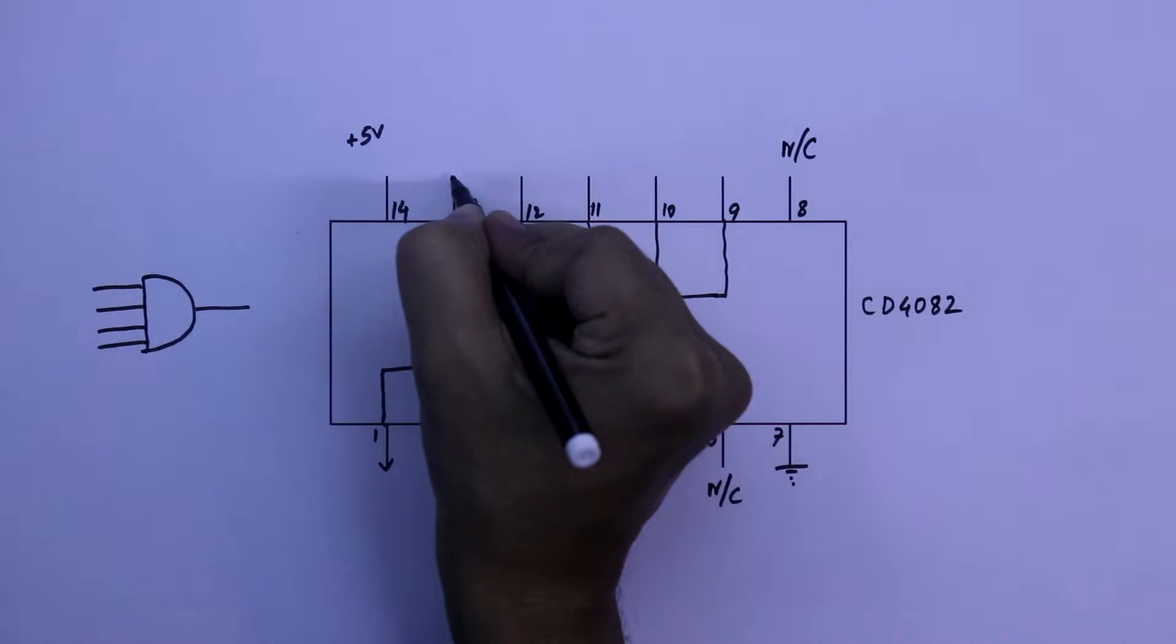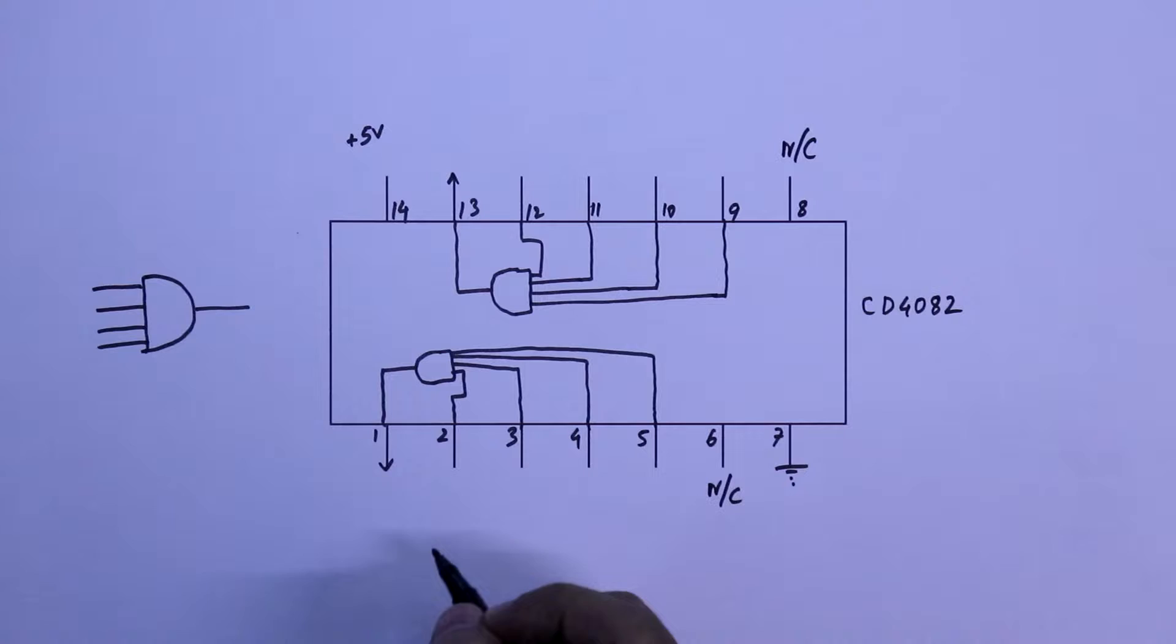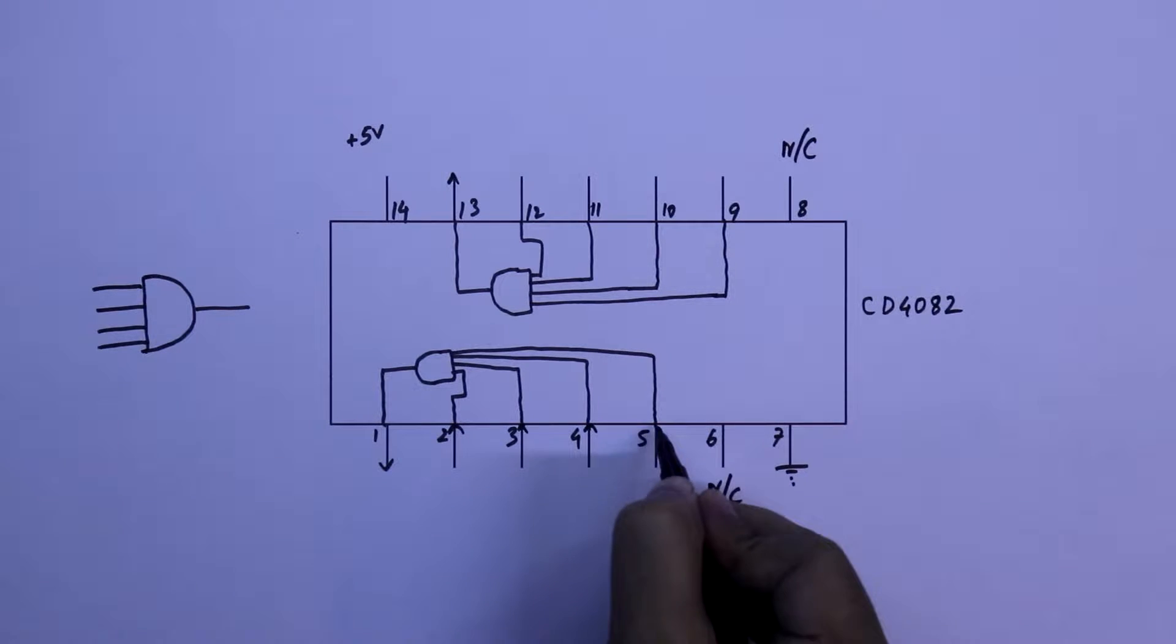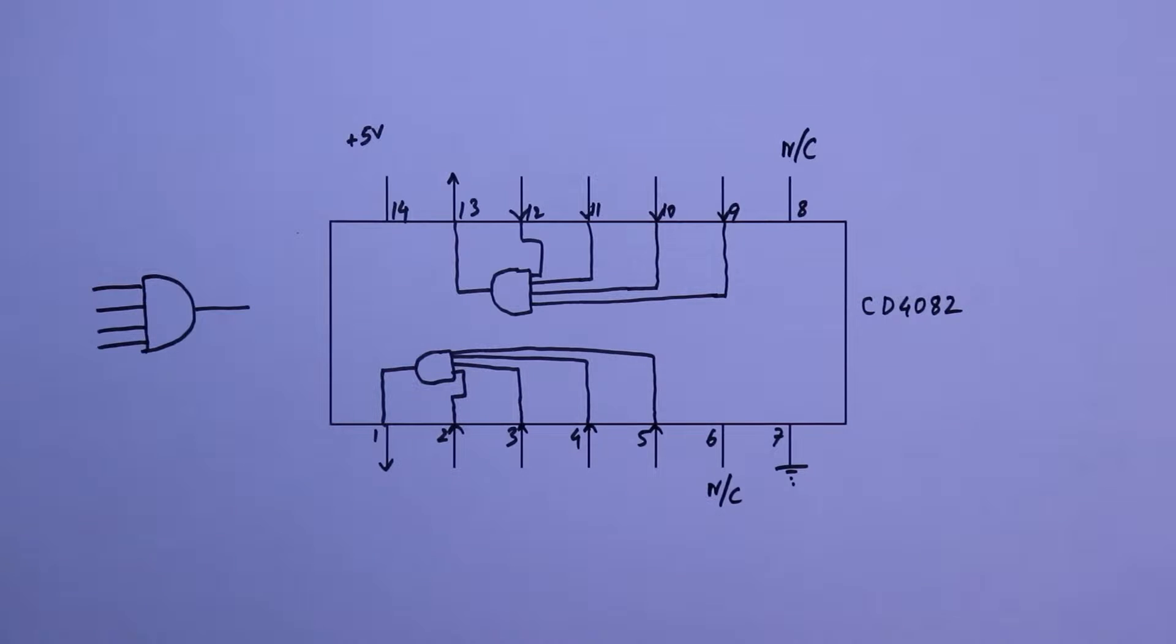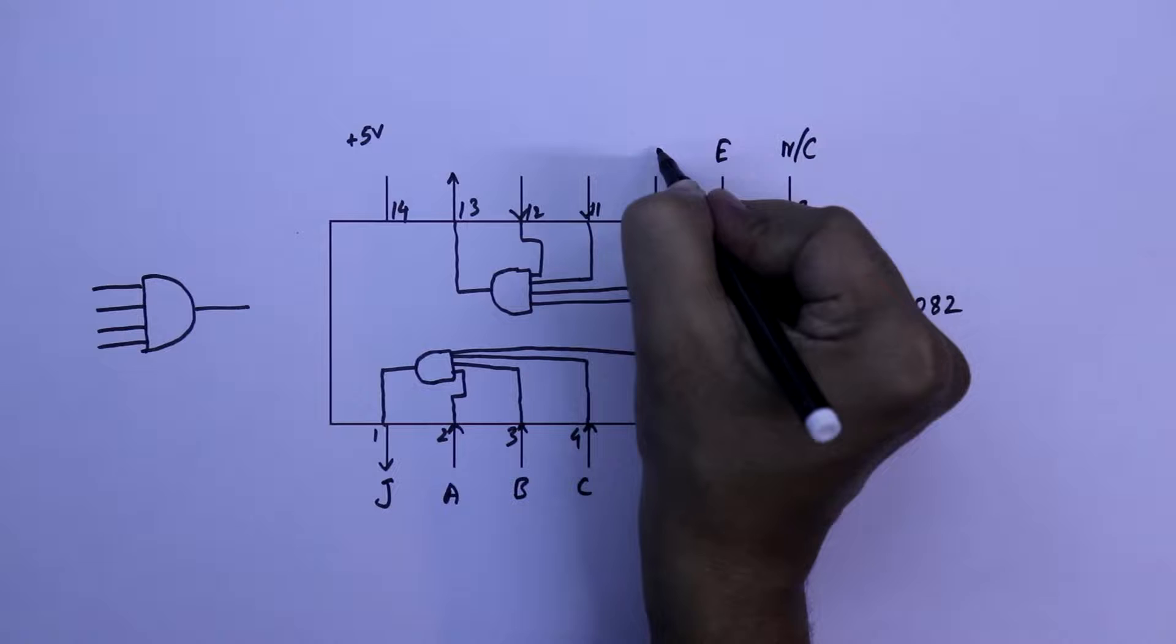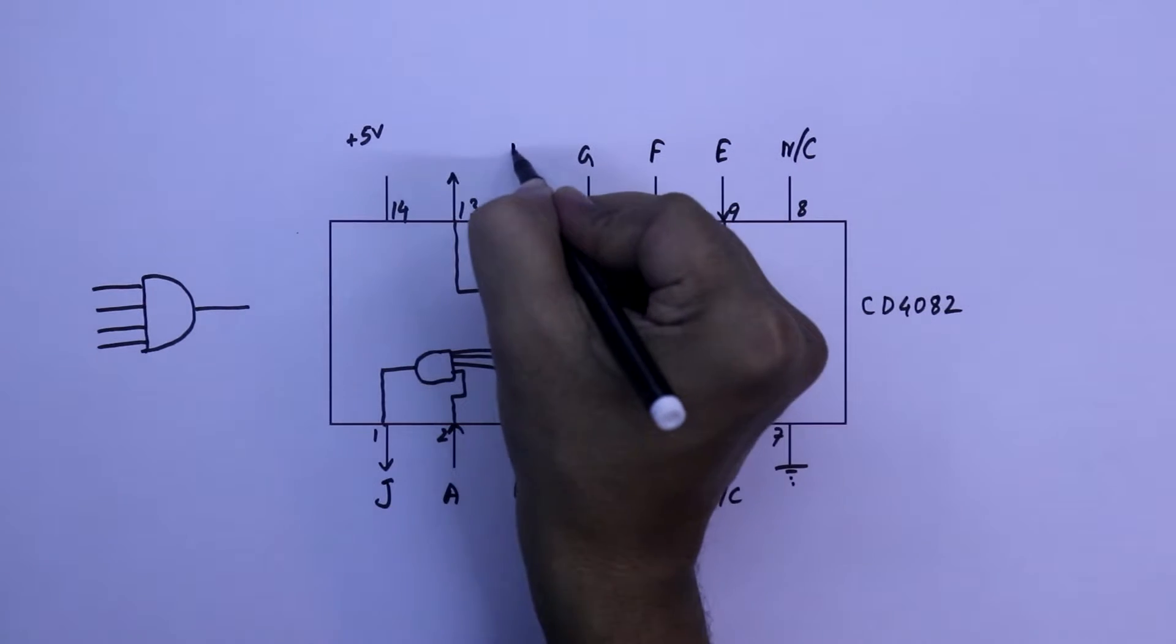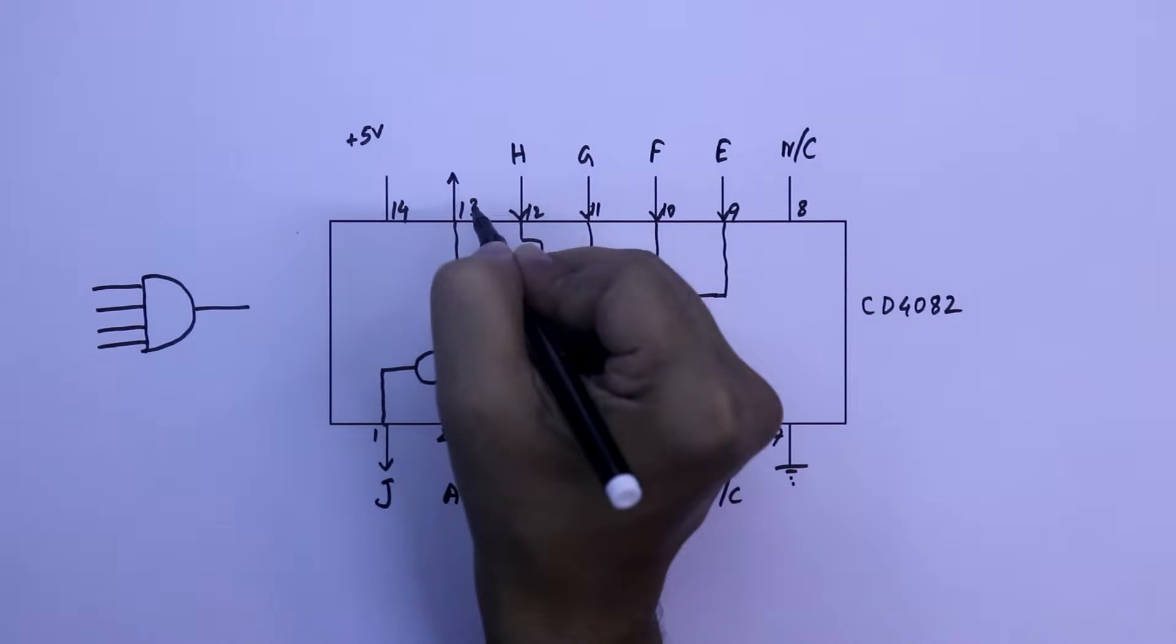Pin number 1 and 13, these are outputs, and 2, 3, 4, 5 and 9, 10, 11, 12 are the inputs. The input of first gate is ABCD and this output we name it as J. Inputs for second gate will be EFGH and the output we call it K.